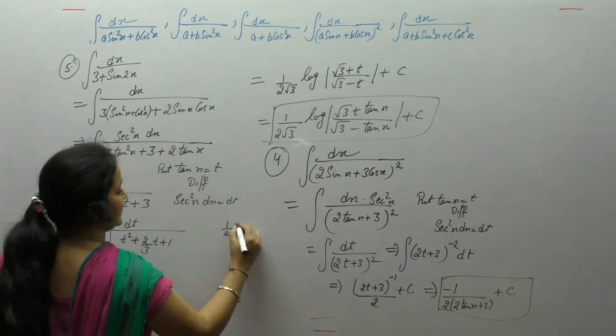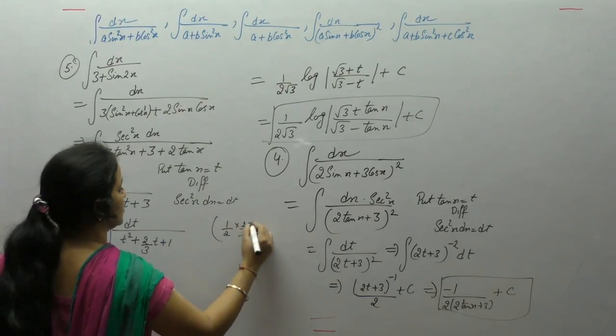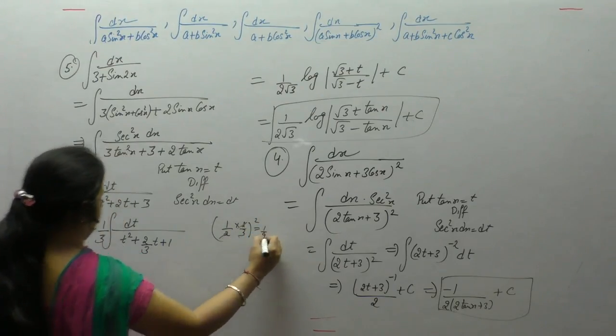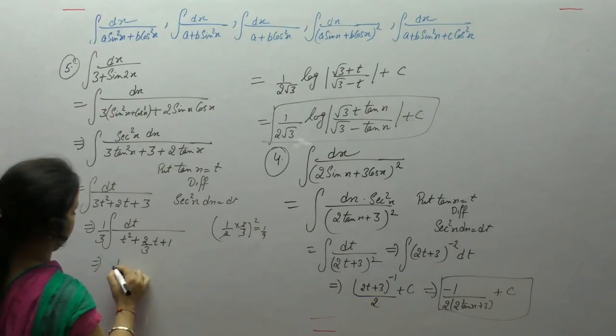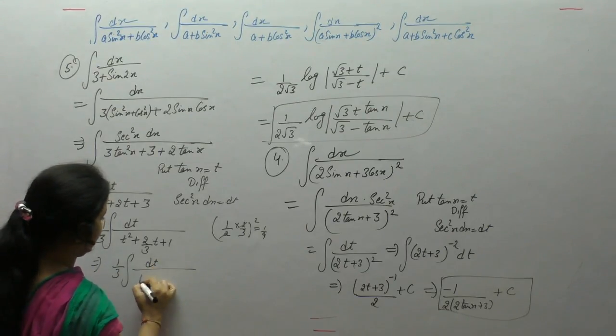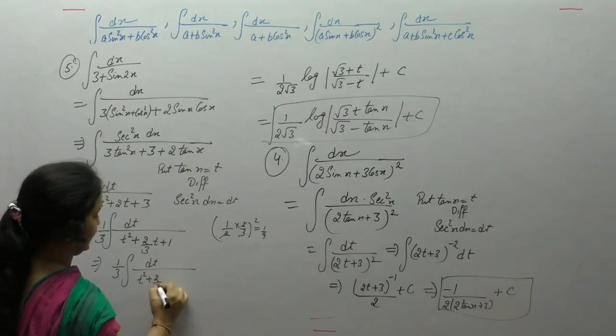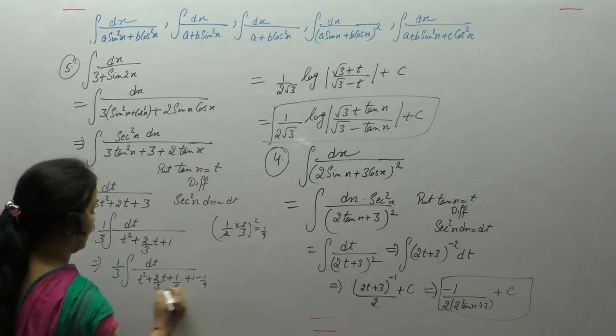Now add and subtract half coefficient of x whole square, 1 by 9, add and subtract 1 by 9. dt upon t square, plus 2 by 3t plus 1 by 9, plus 1 minus 1 by 9.